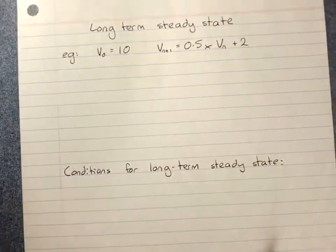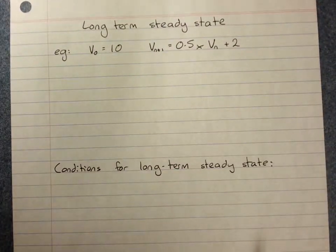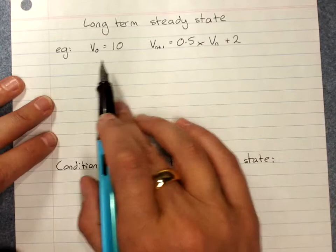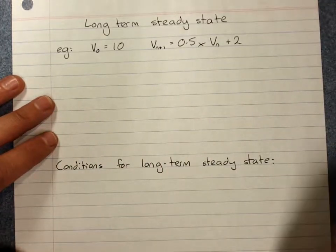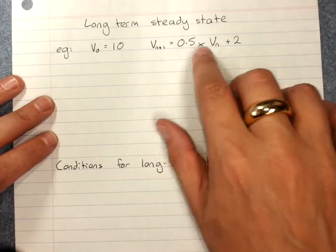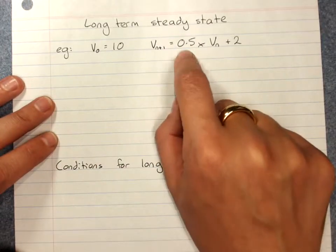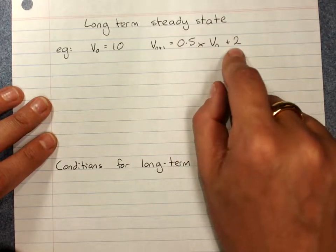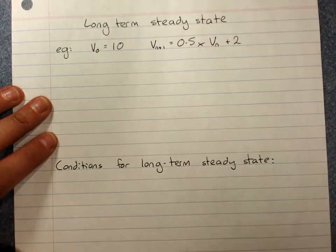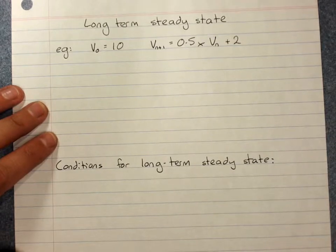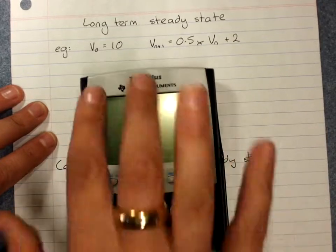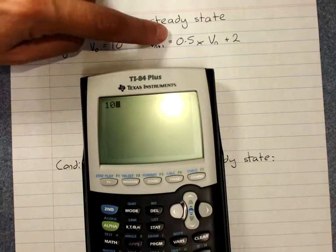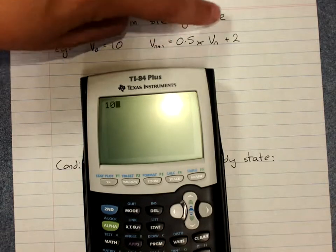We now have to look at long-term steady state, which is kind of similar to trivial sequences. Consider this recurrence relationship — geometric and arithmetic. Geometric decay because the ratio is between 0 and 1, and arithmetic growth. We start with 10, and it's half of the previous term plus 2.